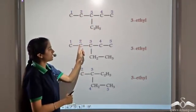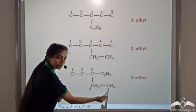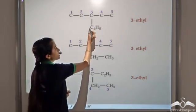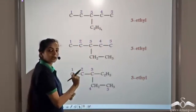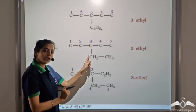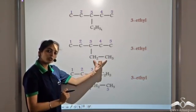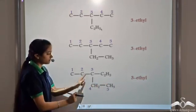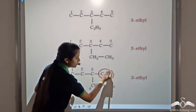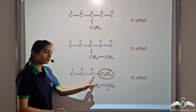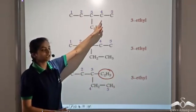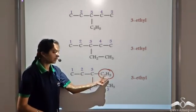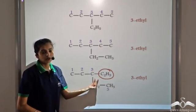When we number the chain, whether we count 1, 2, 3, 4, 5 one way or expand the ethyl group and take a different chain, the longest chain still consists of 5 carbon atoms and the substituent is still attached at carbon number 3. So the prefix remains 3-ethyl in all cases. It does not make a difference whether you expand the ethyl group or not.